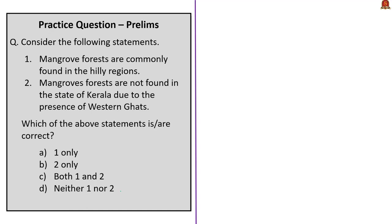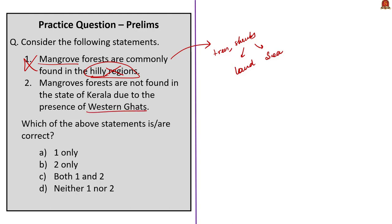The next question is about mangroves. Statement 1 — mangrove forests are commonly found in hilly regions — is wrong; mangroves are trees, shrubs and ferns found at the boundary between land and sea, not in hilly regions. Statement 2 — mangrove forests are not found in Kerala due to the Western Ghats — is also wrong; not all of Kerala is covered by the Western Ghats, so other parts can have mangrove forests. Since neither statement is correct, the answer is neither 1 nor 2.